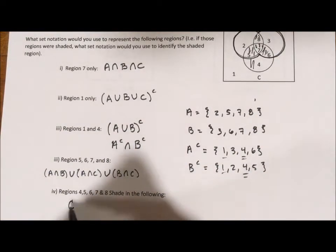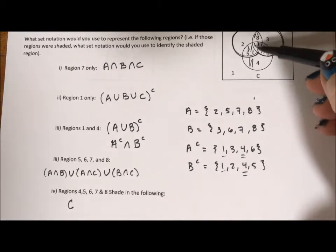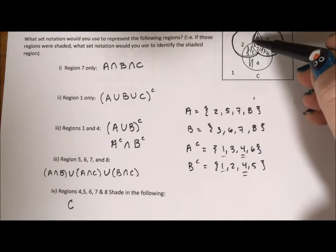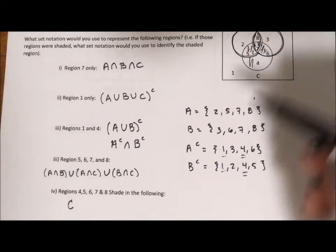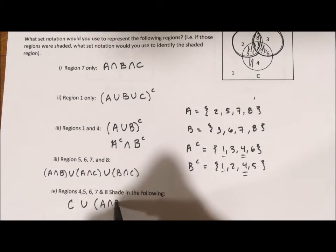And I want to add to that A. But I can also add to that 7. So I kind of want to add this. So I want the union of C with A intersection B.